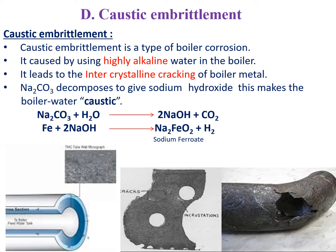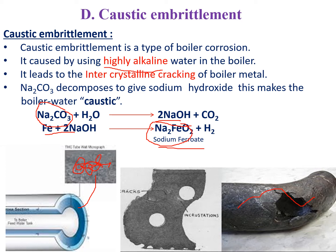Because of NaOH or alkaline water entering the cracks, the surface looks good but the inside is already being damaged. At one point, the instrument will suddenly fail, leading to total damage of the plant — that is why caustic embrittlement is very dangerous. When water has an alkaline nature, for example containing Na2CO3, high-pressure and high-temperature boilers decompose it into NaOH. This NaOH enters the minute pores, interacts with iron, and produces sodium ferroate (sodium pyronite), weakening the iron internally while the outer surface looks good.